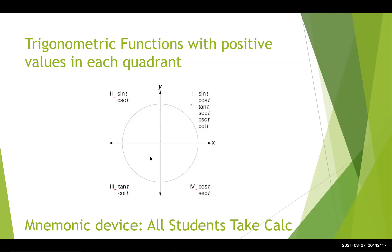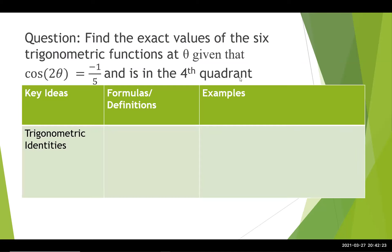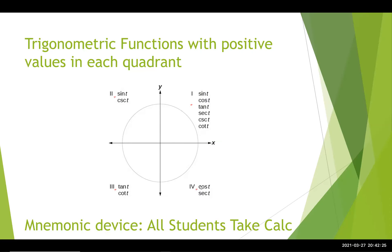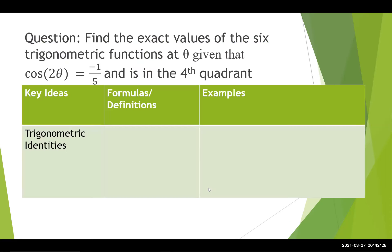So that is a key point to the problem we're looking at. Notice in this problem we're looking at the fourth quadrant. And so that means only cosine and its reciprocal will be positive. Now we need to find the six trigonometric functions at theta, but we're given 2 theta.